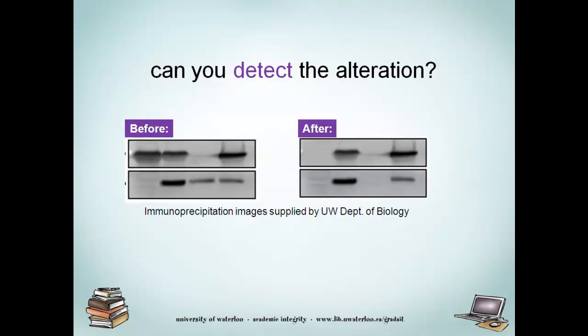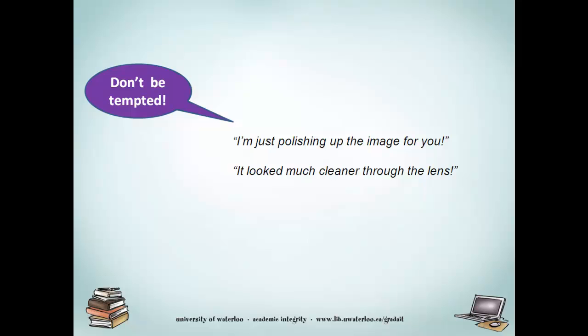Simple imaging software such as Photoshop makes it very easy for people to adjust or manipulate images. These before and after pictures demonstrate how difficult it can be for the naked eye to detect an alteration. Journals are responding to this growing problem by using detection software which can find digital codes or marks left behind when images are altered. So edit or alter images with caution.